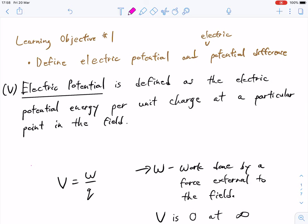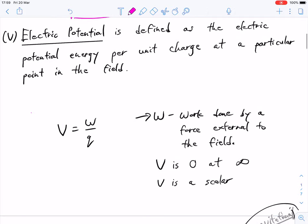Our first learning objective is to define electric potential and potential difference. Some textbooks are going to call this electric potential difference, which is probably more of a natural word because it's actually the difference between electric potentials. But at some point along the way, physicists got lazy and they just said, let's just call it the potential difference. Everybody knows we're referring to the potential difference between two electric potential points.